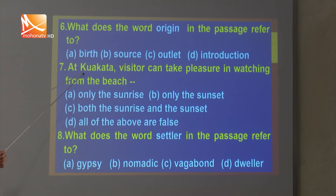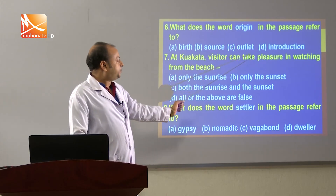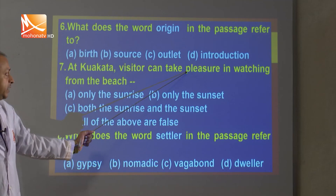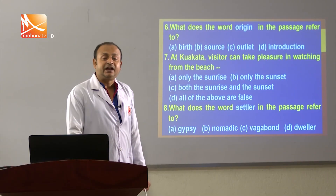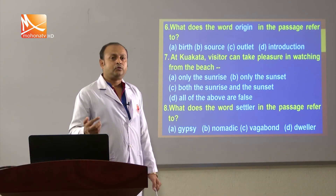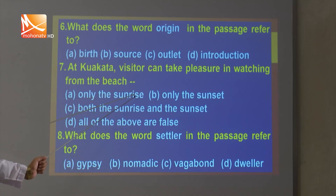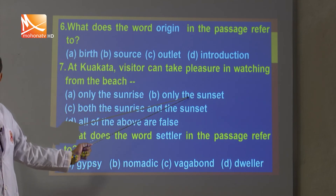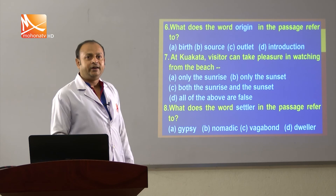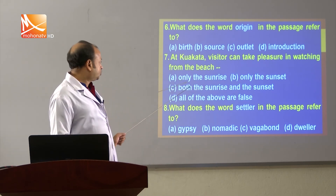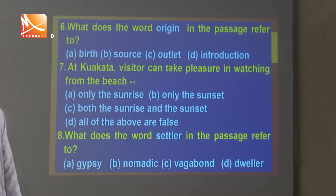Question 7: At Kua Kata, what can a visitor take pleasure in watching from the beach? The answer from the text is that visitors can watch both the sunrise and the sunset from the beach. So option C — both the sunrise and the sunset — is the correct answer.